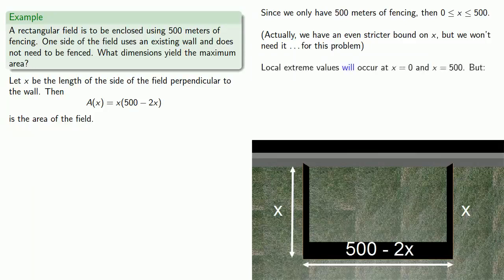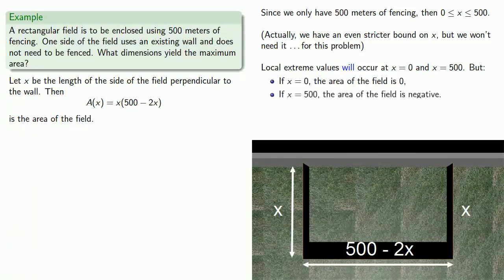So let's see what we have so far. We are guaranteed we will have local extreme values at the endpoints, at 0 and at 500. But let's think about that. If x equals 0, the area of the field is 0.